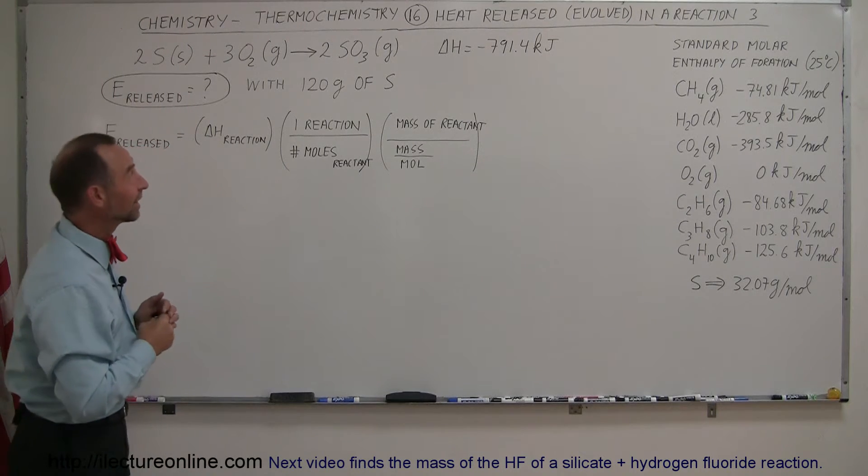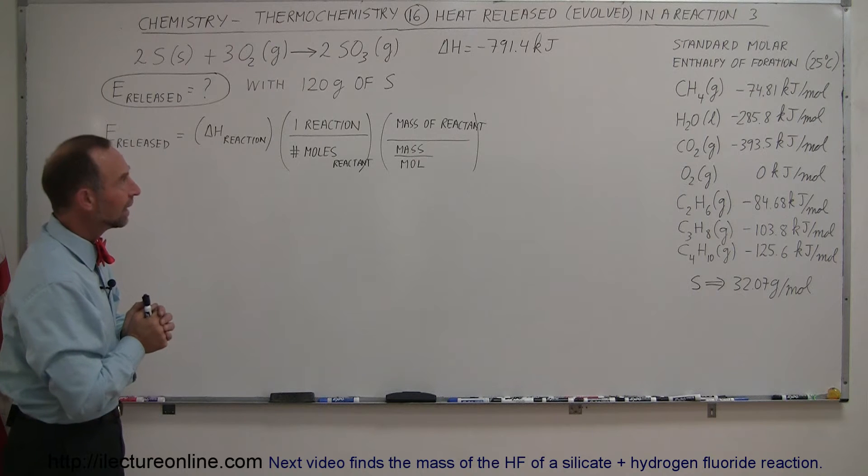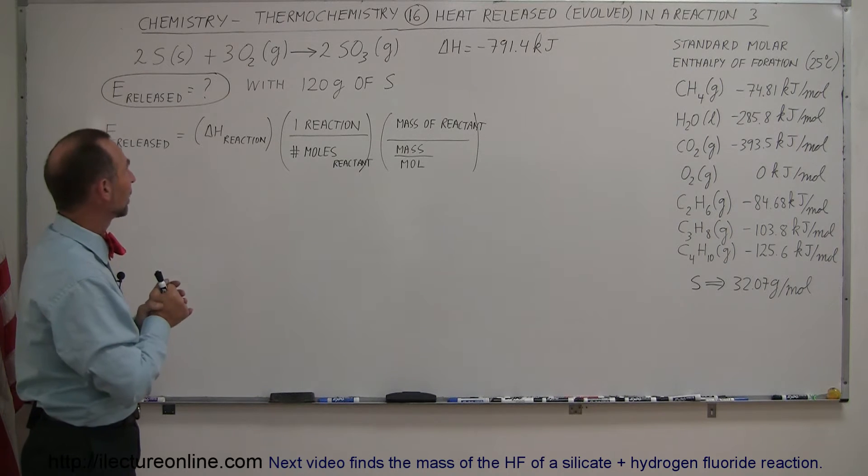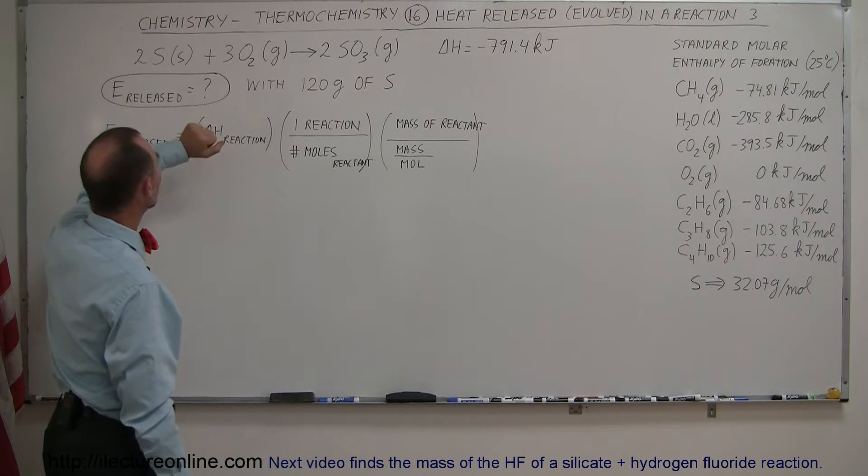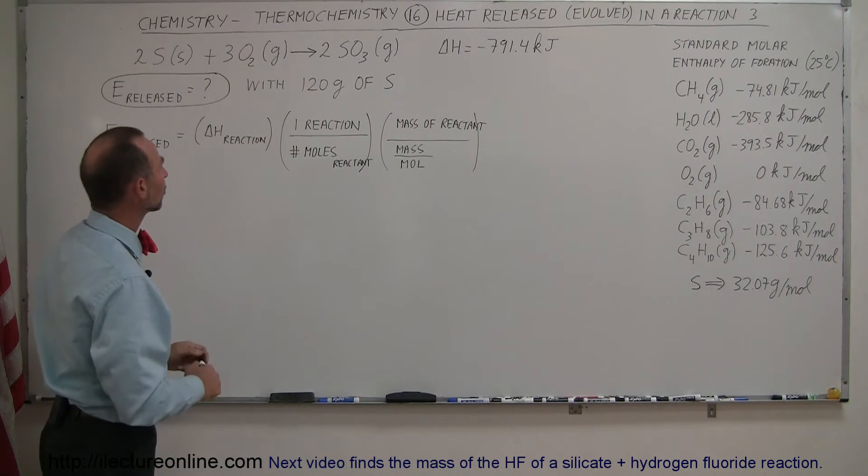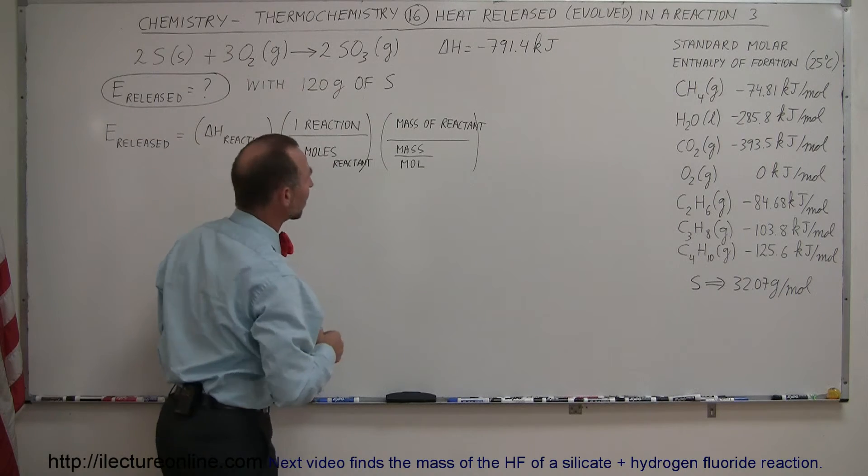Our next example of how to calculate the amount of heat evolved or released by a reaction is regarding this particular equation here. We have some solid sulfur, 2 moles, we add 3 moles of oxygen gas, combine it and we get 2 moles of sulfur trioxide.